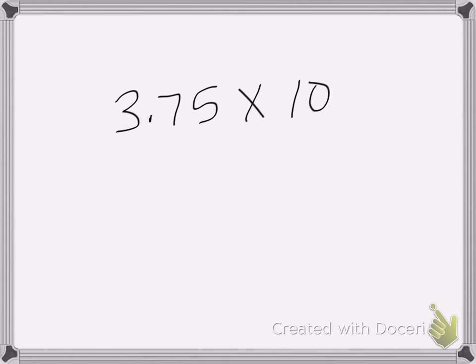Alright, so now we're going to worry about multiplying decimal numbers by 10 and 100. So the trick for this is when we multiply by 10 and 100, all we have to do is move the decimal place one place to the right.